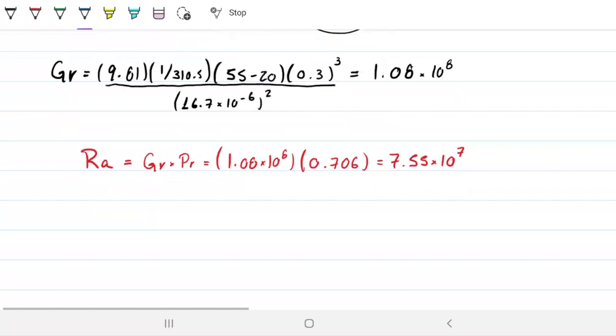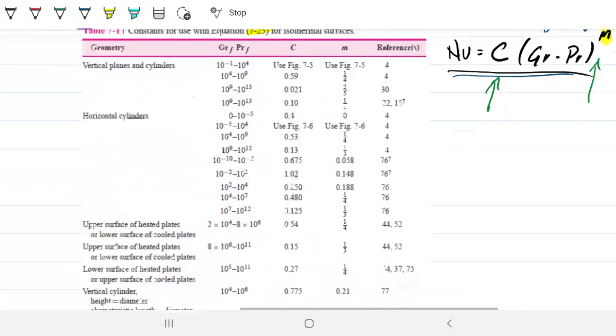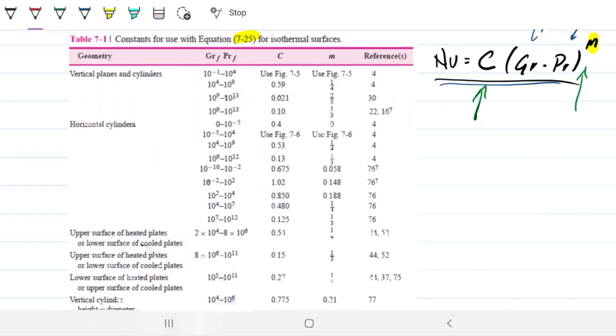So we have Rayleigh number, the multiplication between the two. So now what we need to do is find the coefficients that we're about to plug in to find Nusselt. We need to find C and we need to find n. So table 7.1 - this table should be on your lecture slides. We're looking at a vertical plate, so we're just looking at the top here. And among the vertical plates, I'm looking for a Rayleigh number, Grashof times Prandtl - ours is seven times 10 to the seventh. So I'm using C which is 0.59, and I'm using n which is a quarter.